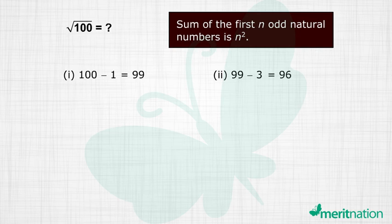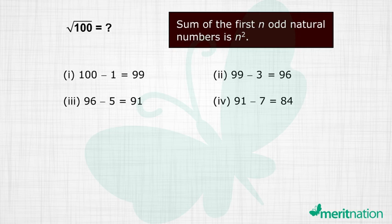Remember, we have to proceed in this manner till we get a 0. So after 3 we subtract 5. So 96 minus 5 gives you 91. Now from 91 we will subtract the next odd natural number which is 7. So 91 minus 7 gives you 84. And we go on.